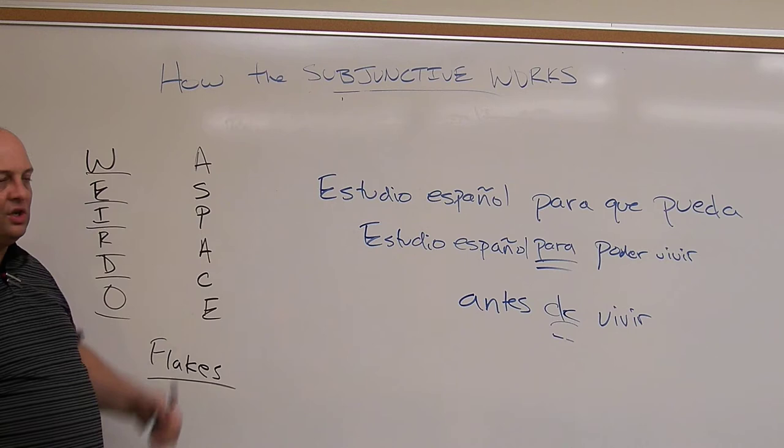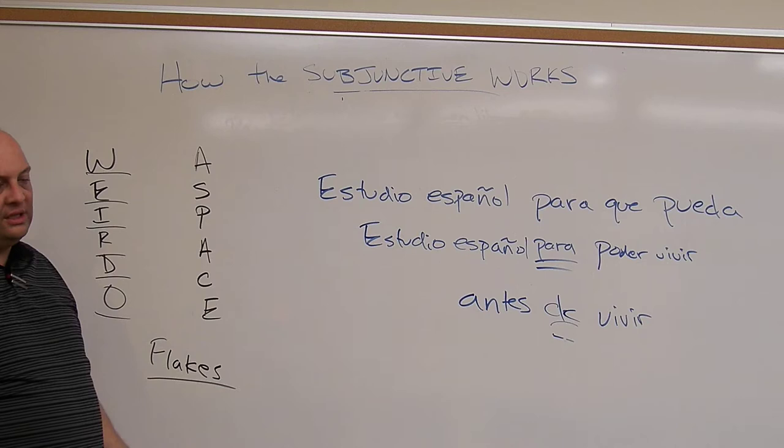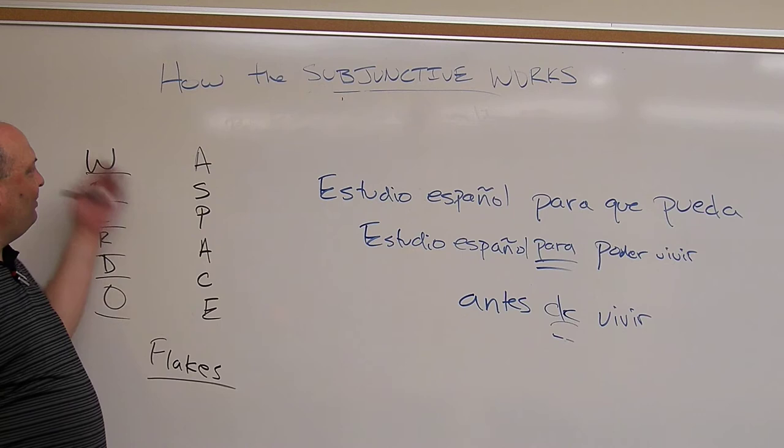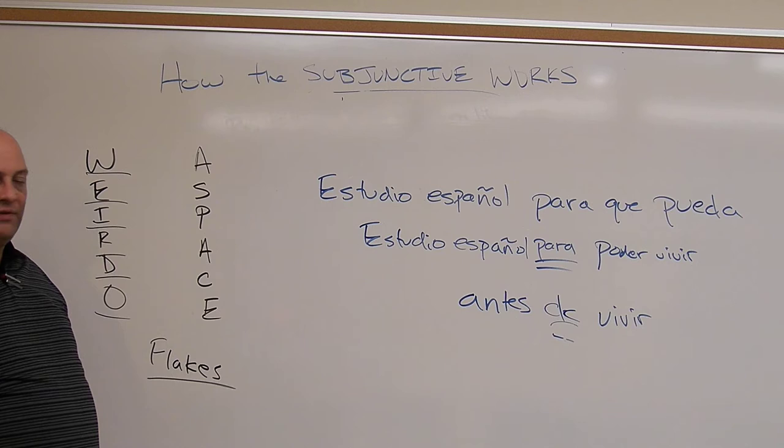When you hear those, the subjunctive alarm should go off and subjunctive should be coming. You recognize those triggers, the subjunctive comes, and then you can look at the shorter list of ones that indicate the indicative — alarms don't go off and you write it in the present tense. That's how the subjunctive works. Keep studying, keep practicing. If you have questions, email me. Thanks, have a good night.